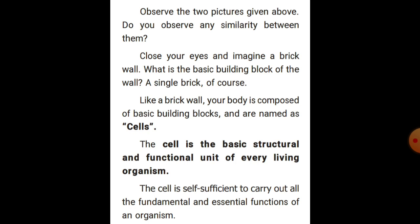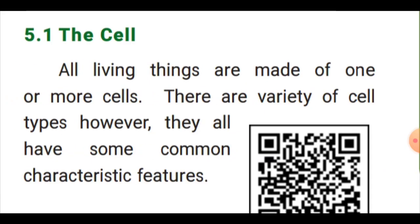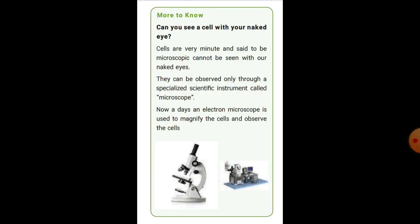A cell is the basic structural and functional unit of every living organism. The cell is self-sufficient to carry out all the fundamental and essential functions of an organism. All living things are made up of one or more cells. There are a variety of cell types; however, they all have some common characteristic features. Cells can only be observed through a specialized scientific instrument called a microscope.